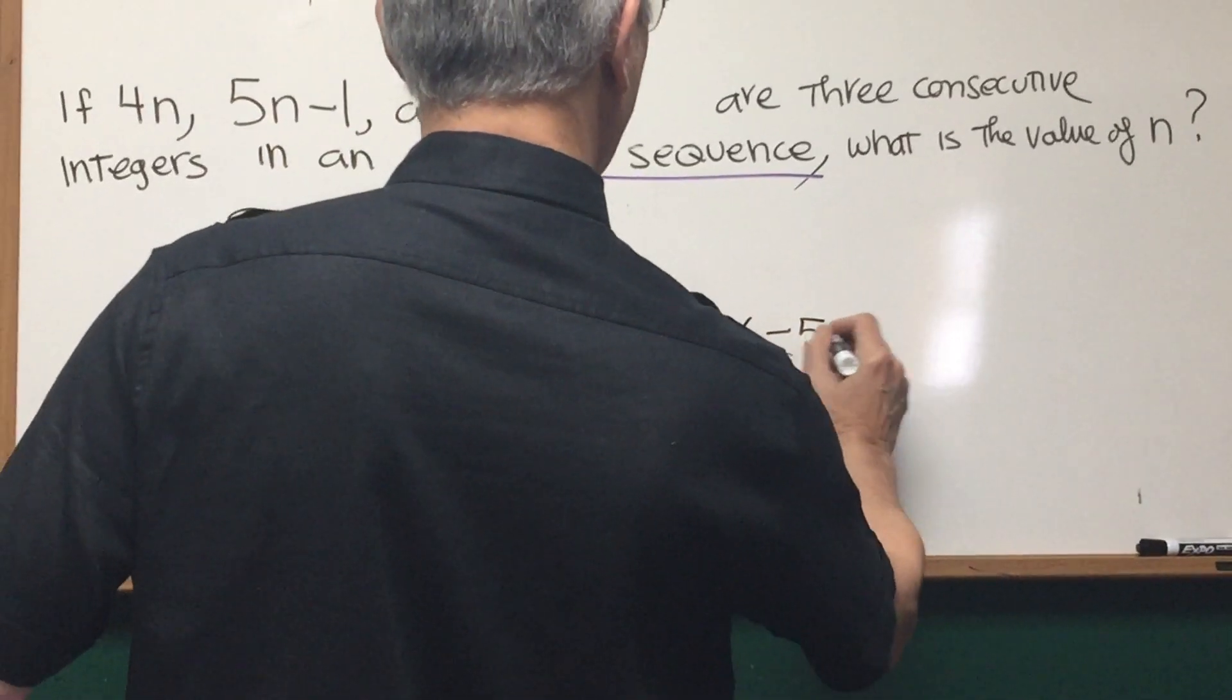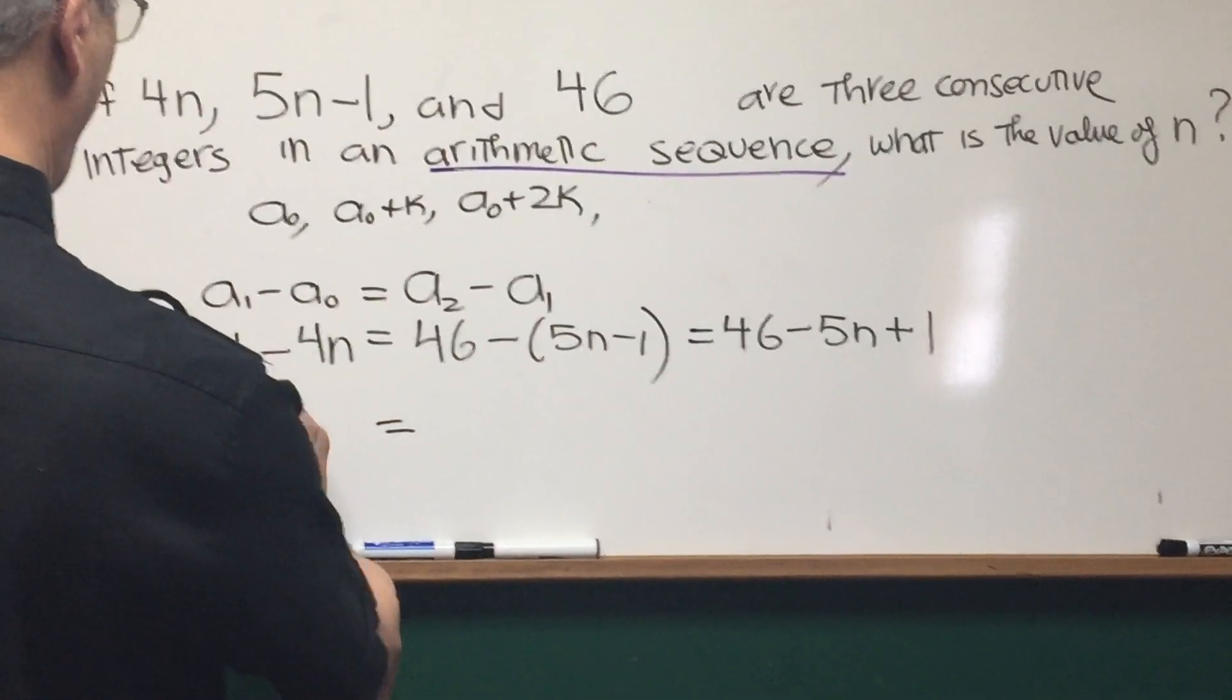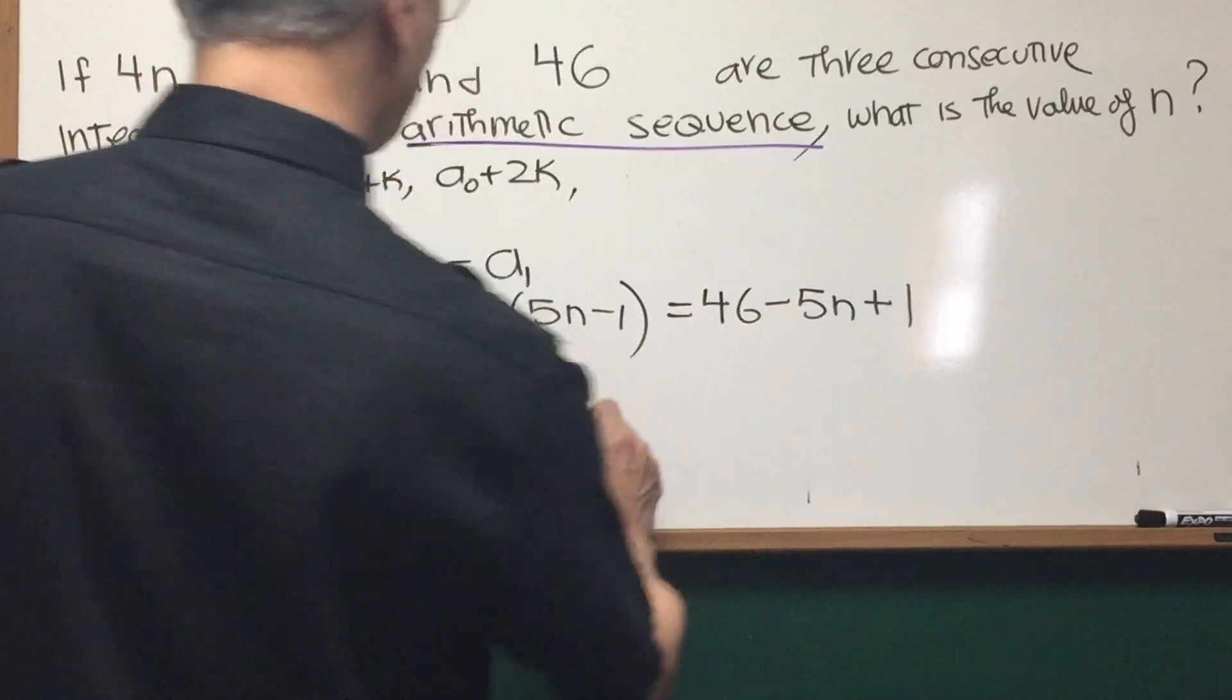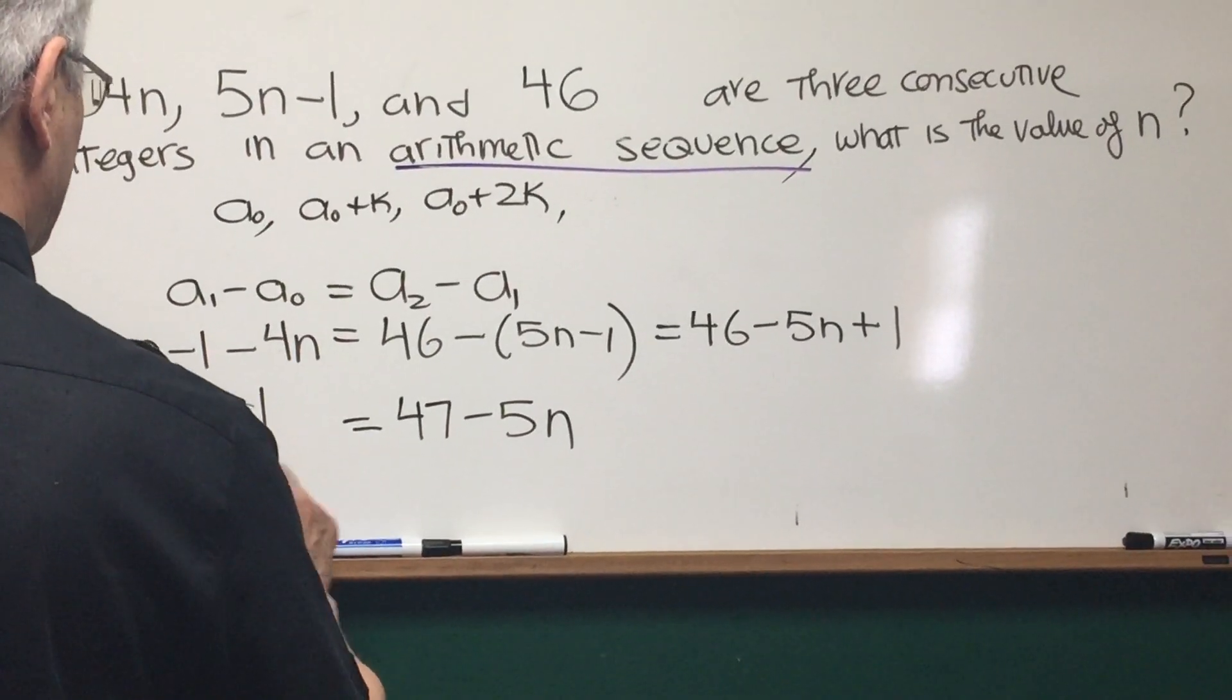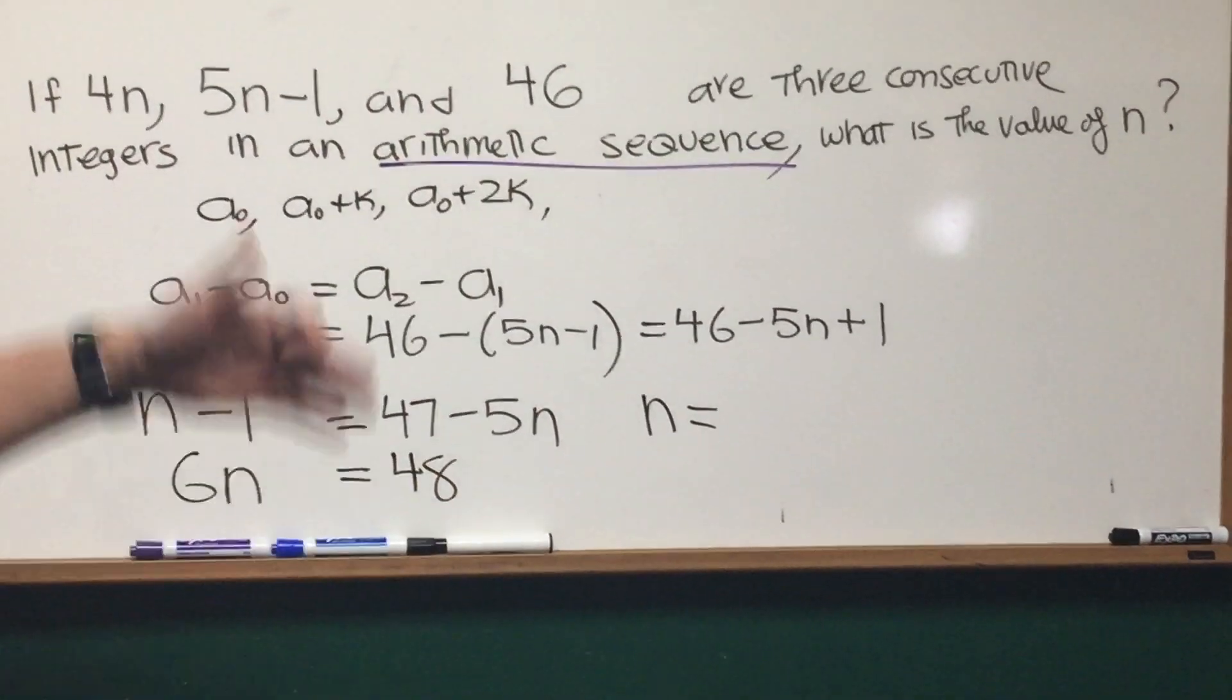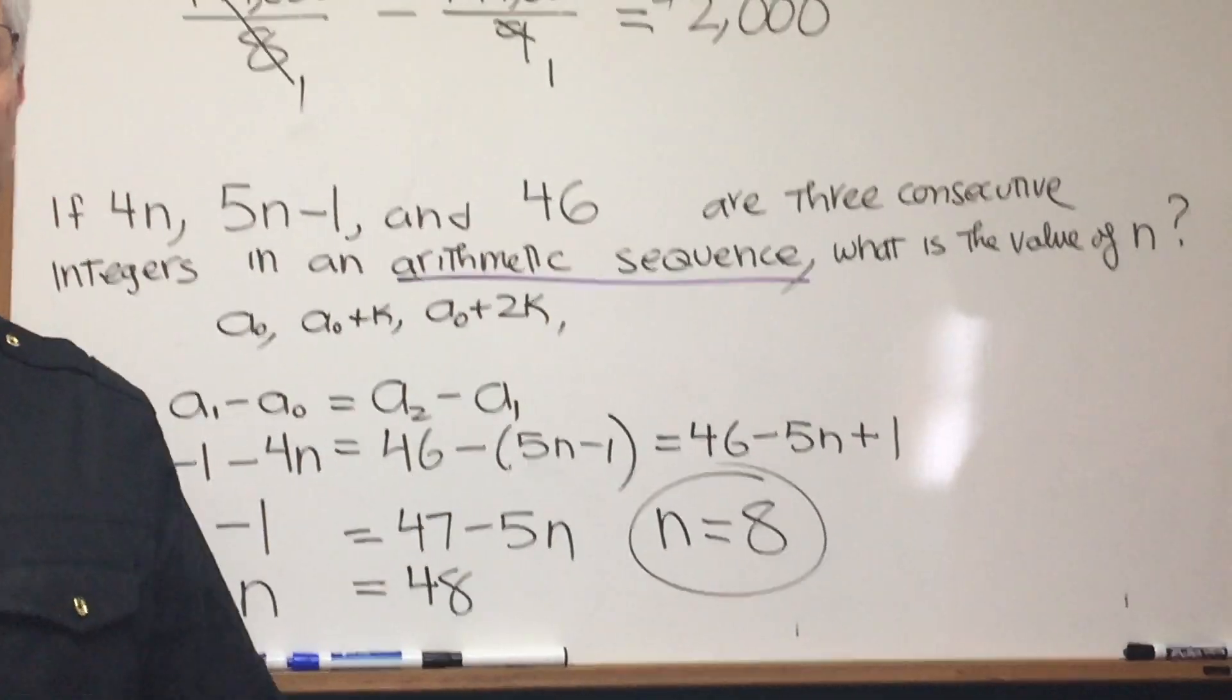46 minus 5n plus 1. And let's see, let's simplify this on the left. 5n minus 4n is 1n. n minus 1 is equal to what? 46 plus 1 is 47 minus 5n. Let's do a little mental algebra here. Add 5n to both sides, we'll get 6n. Add 1 to both sides, we'll get 48. 6n is equal to 48. Well, divide both sides by 6. 48 divided by 6 is 8. And that's what the value of n is, 8. And that's how to do this problem with an arithmetic sequence.